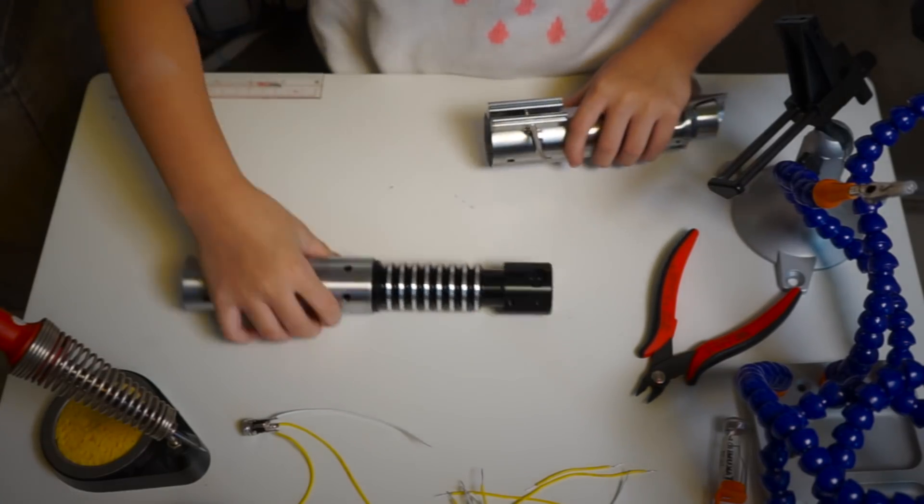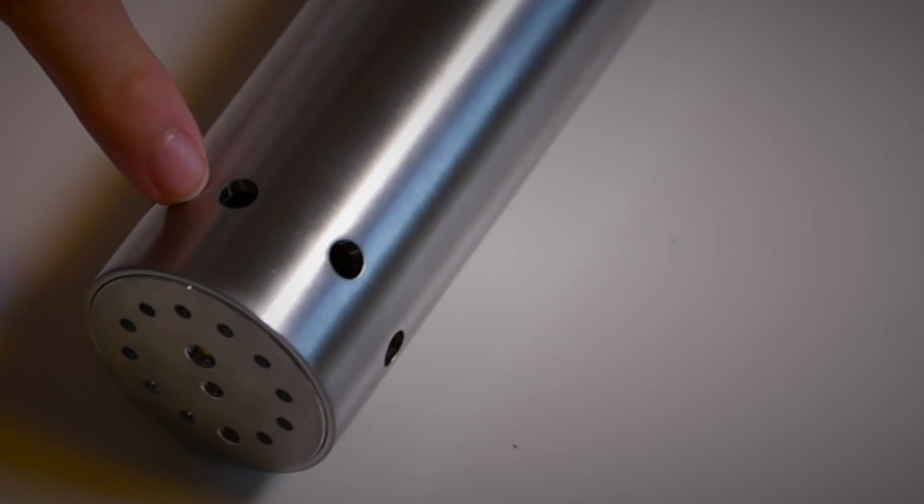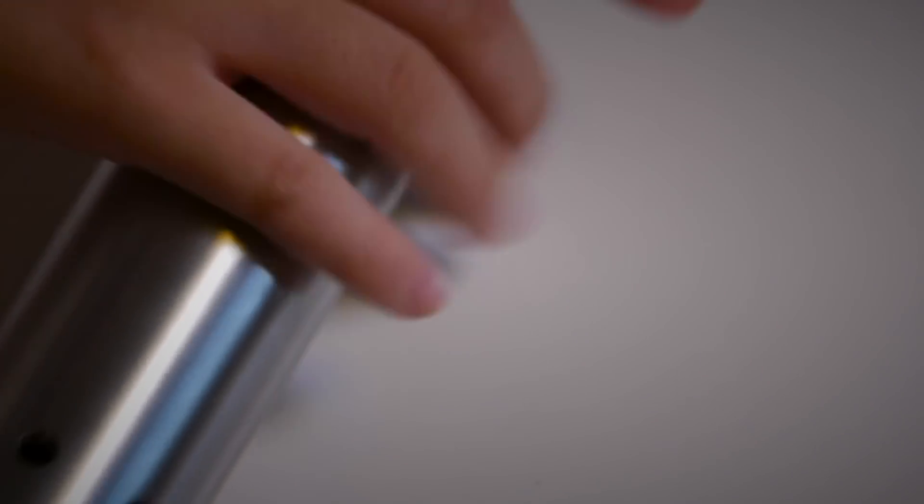For this project, I'll be using a replica Graflex flash gun. It's a special kit made for building a lightsaber, just like the one used by Rey in the movies. It has all the proper cut-out holes and all the parts for making the different versions of the saber.